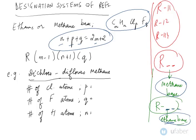Where M is the number of carbon atoms, N is the number of hydrogen atoms, P is the number of chlorine atoms, and Q is the number of fluorine atoms.